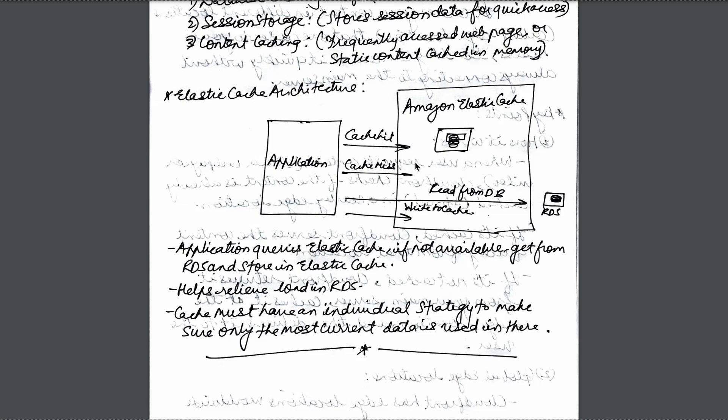Basically, the application queries data from ElastiCache — if available, it gets the data from there; if not available in ElastiCache, it goes to RDS. This is working at the backend and it helps relieve the load on RDS, because data is being taken directly from the cache. The cache has an individual strategy which ensures that current data is present there.